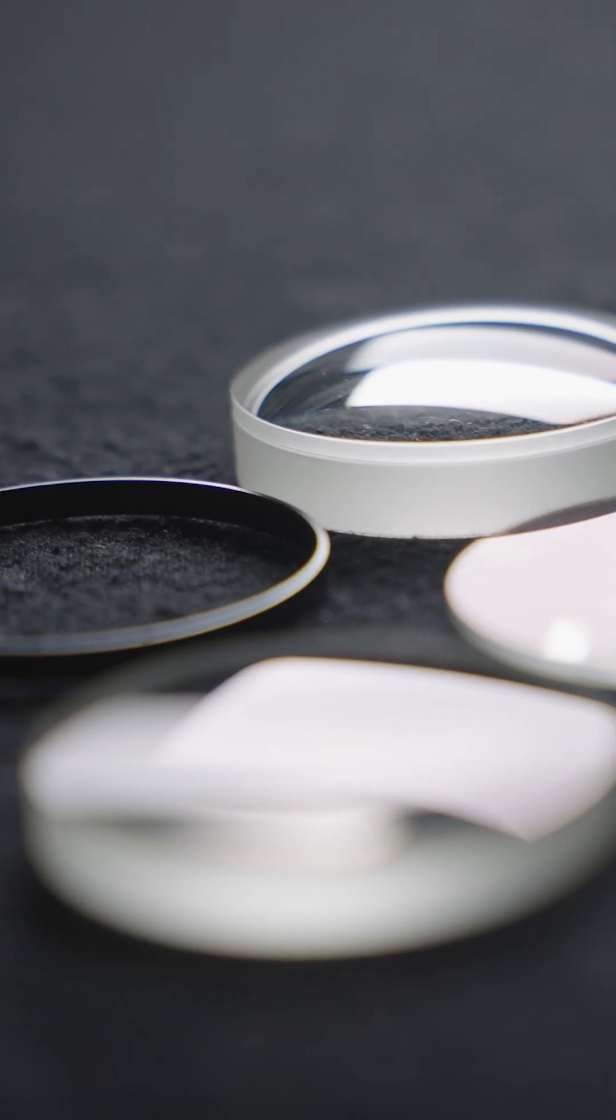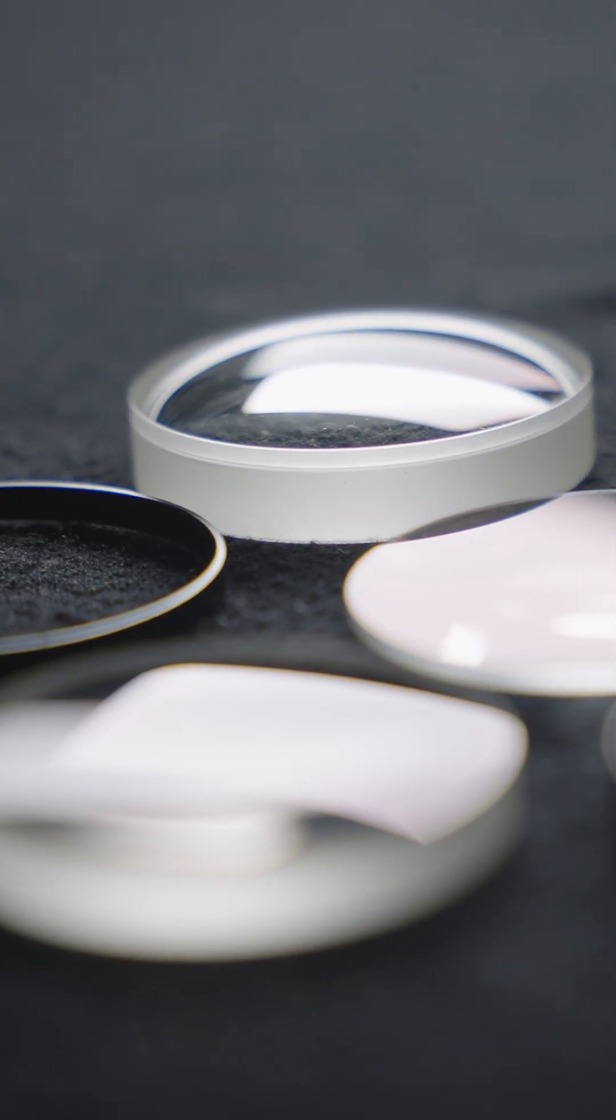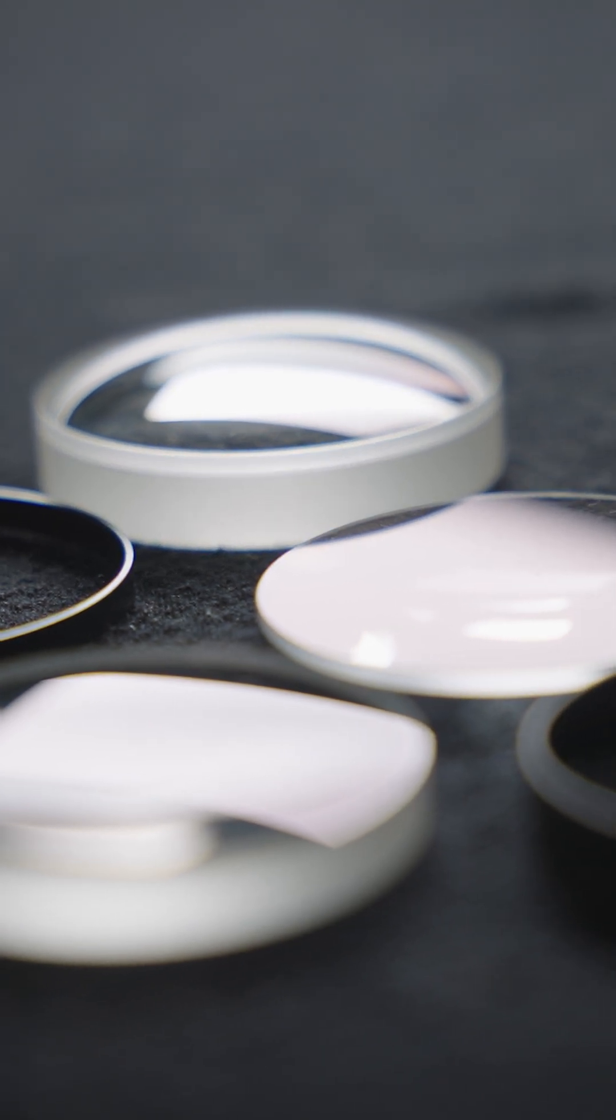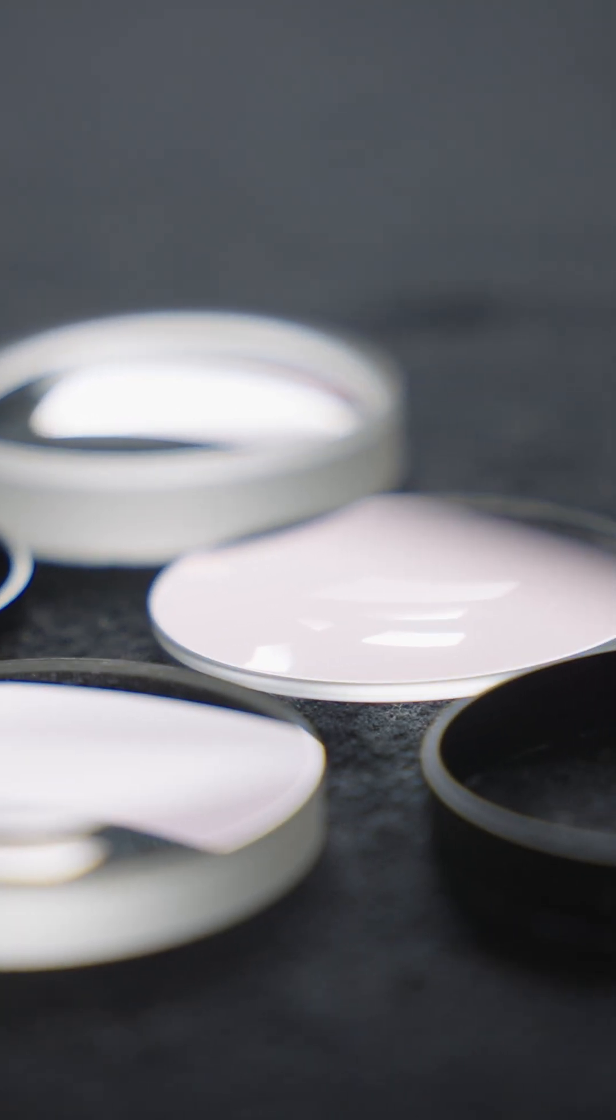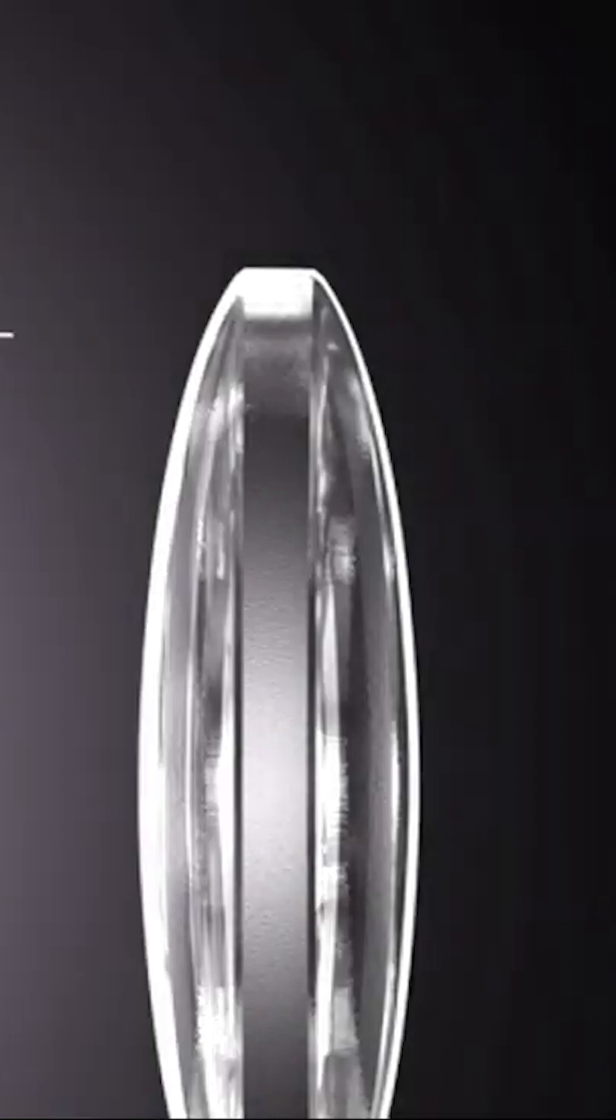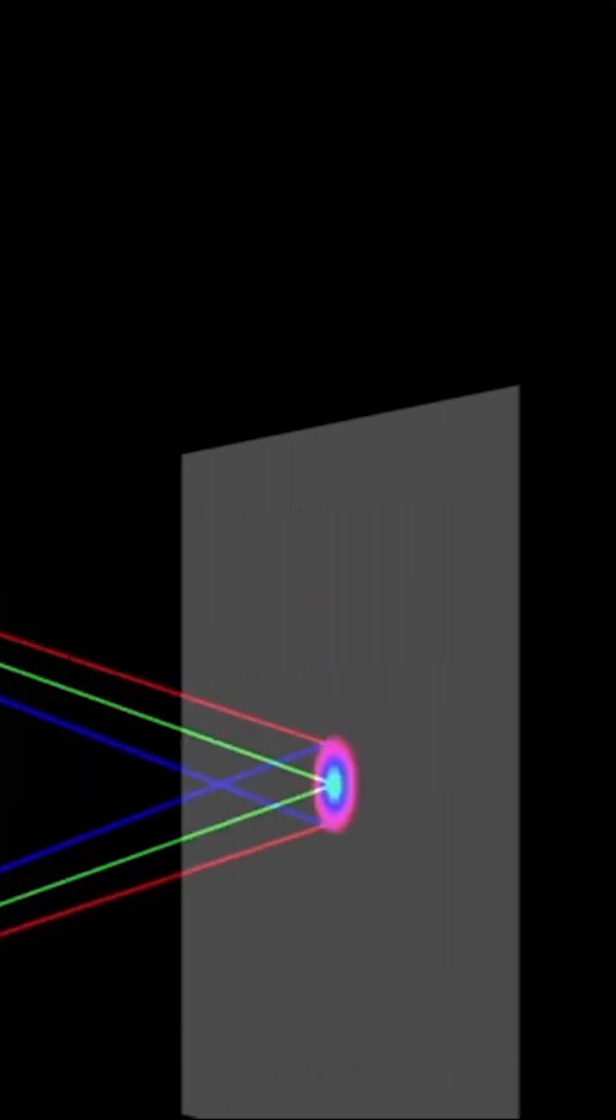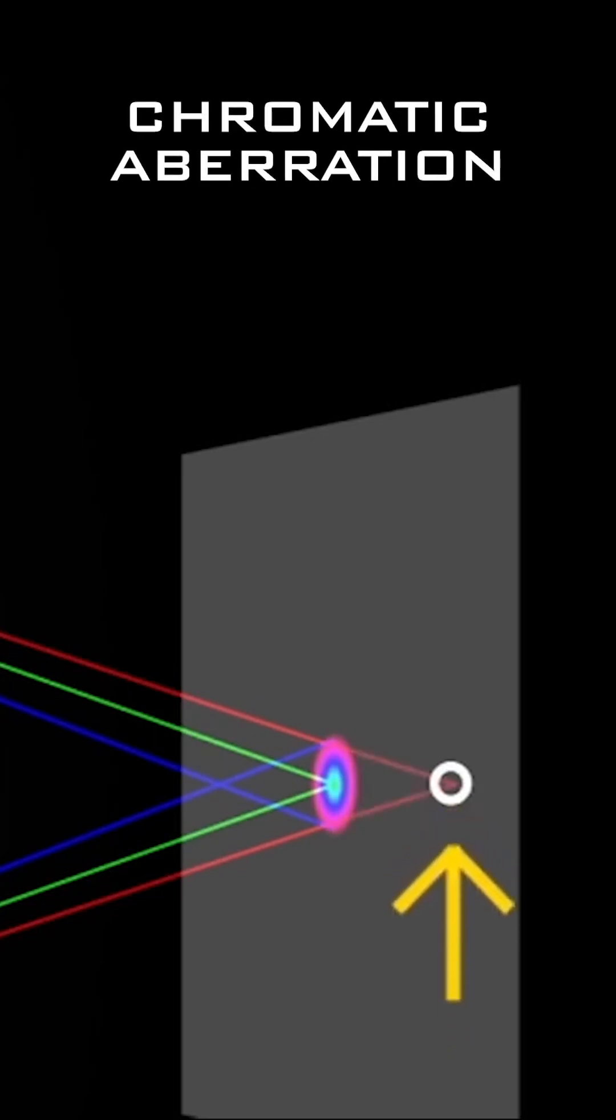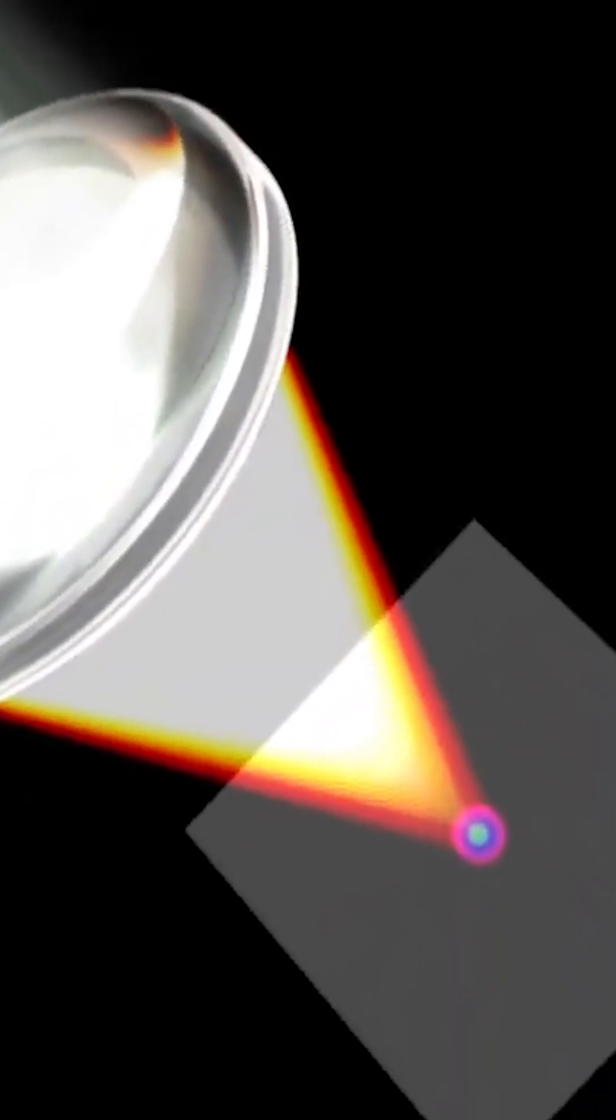Well, coming back to the original statement about the job of an objective being to focus light, we need to remember that different wavelengths of light refract differently. This means that if we only used a single lens, we'd have red, green, and blue light arriving at different focal points. This is called chromatic aberration, and it can show up as purple or blue fringes around high contrast parts of an image.